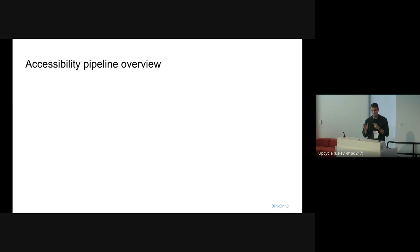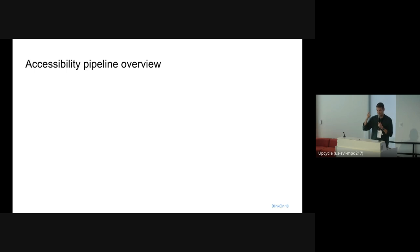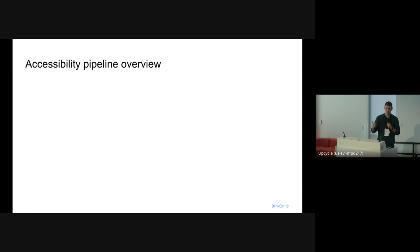Those accessibility APIs, at least on Windows, have two big requirements. The first one is that they are synchronous — meaning when they do a query, they expect to have an immediate response. The second one is that they expect to be connected to the main process of an app, in our case the browser process.